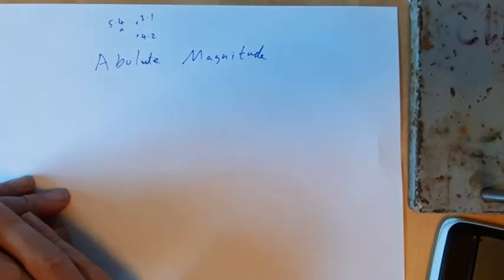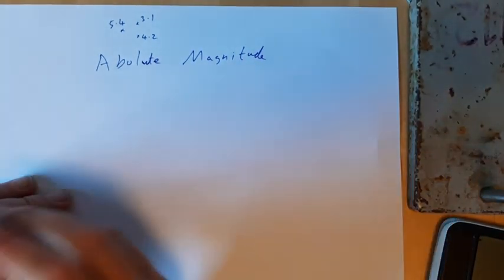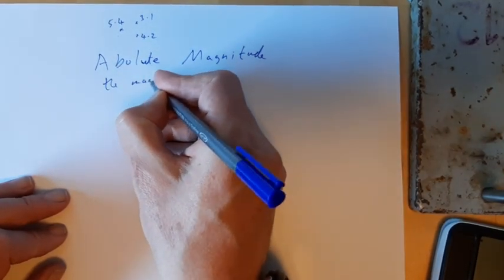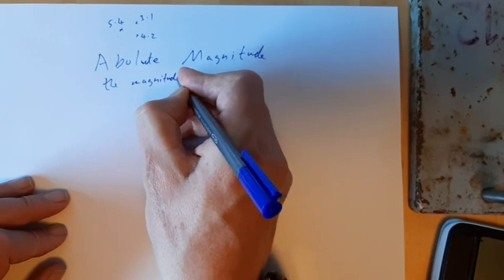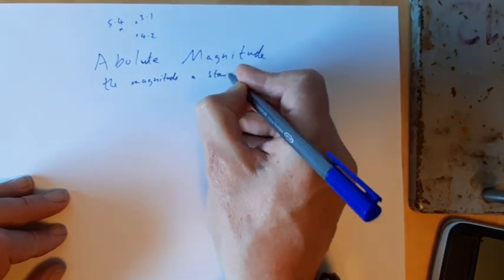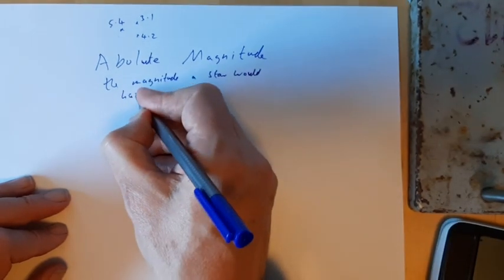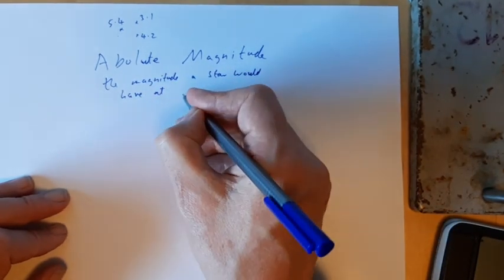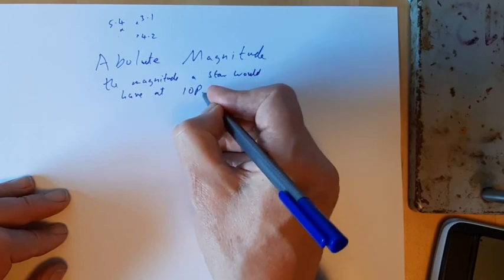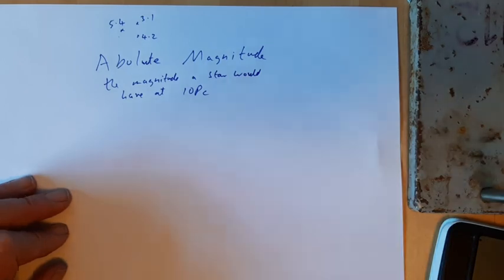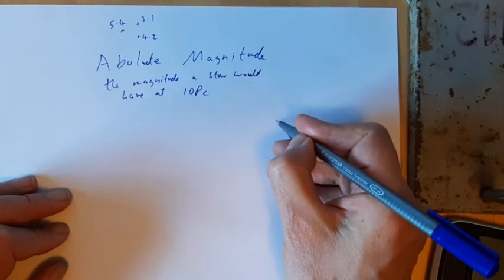Okay, so the absolute magnitude is the magnitude a star would have at 10 parsecs. There's a separate video on what a parsec is, because that's reasonably involved. So let's just do a little bit of thought experimenting here.